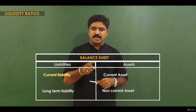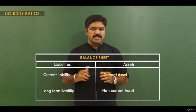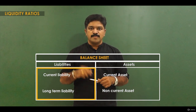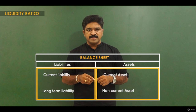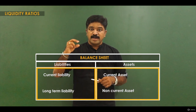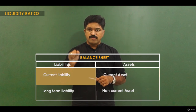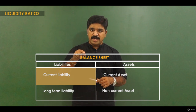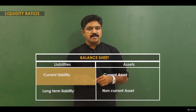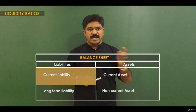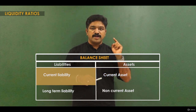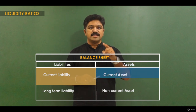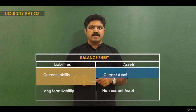Liquidity is mainly influenced by the position of your current liabilities with reference to your current assets. To put it clearly, let's say this box is your total liability size and this is your total asset size. In this liability, current liability occupies a certain portion out of total liability. We know liability means something which you have to pay, and for paying that you need resources — resources are basically assets. For meeting current liabilities, you have to be dependent on current assets.